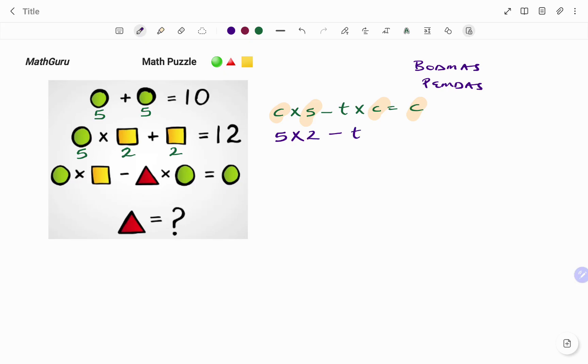Minus T, I don't have a value for my triangle yet, times 5, that's the value of the circle, equals to 5. So I'm going to write that at the bottom. I have 5 times 2 minus my T times 5 equals to 5.